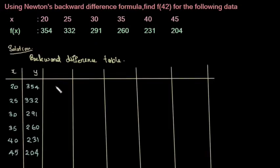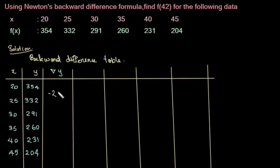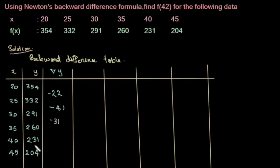So this is the backward difference table. Here is the value of ∇y: 332 minus 354 is minus 22. Next, 291 minus 332 is minus 41. 260 minus 291 is minus 31. And 231 minus 260 is minus 29.